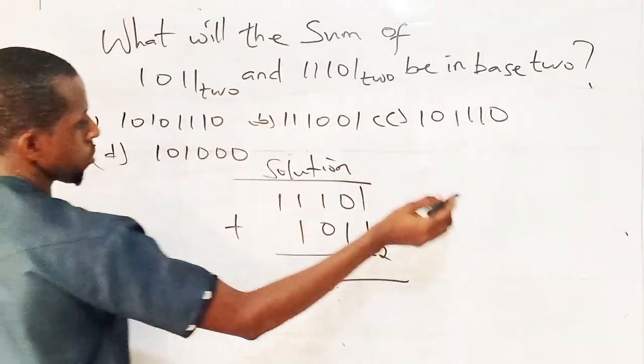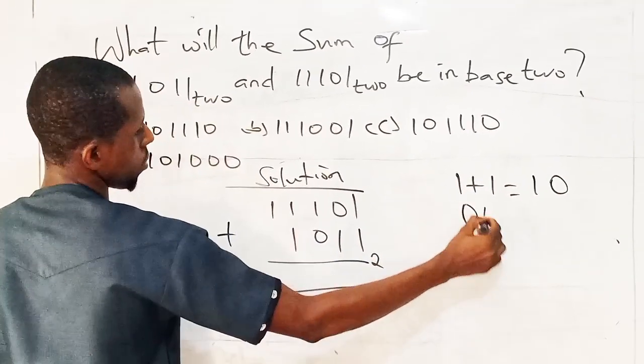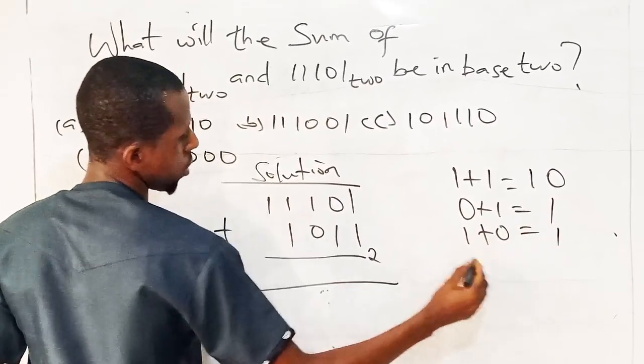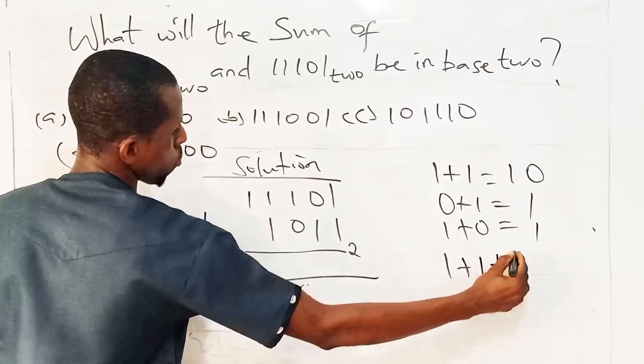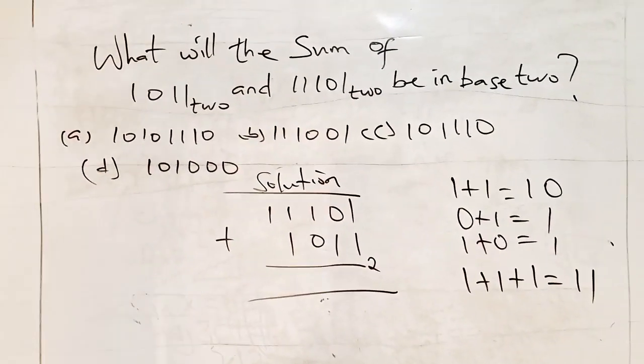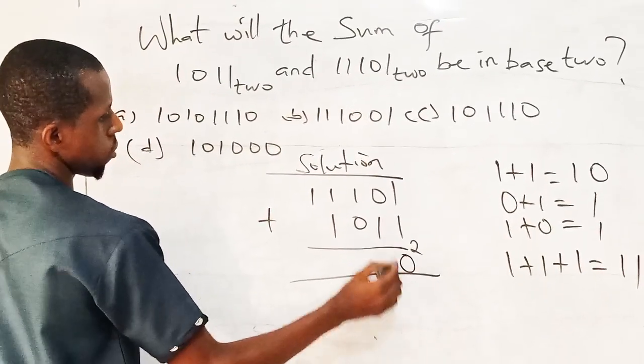When we are doing something like this, I want to take note of some things. 1 plus 1 in number base is 10. 0 plus 1 is 1. 1 plus 0 is 1. So 1 plus 1 is 10. I have my 0, I carry 1.